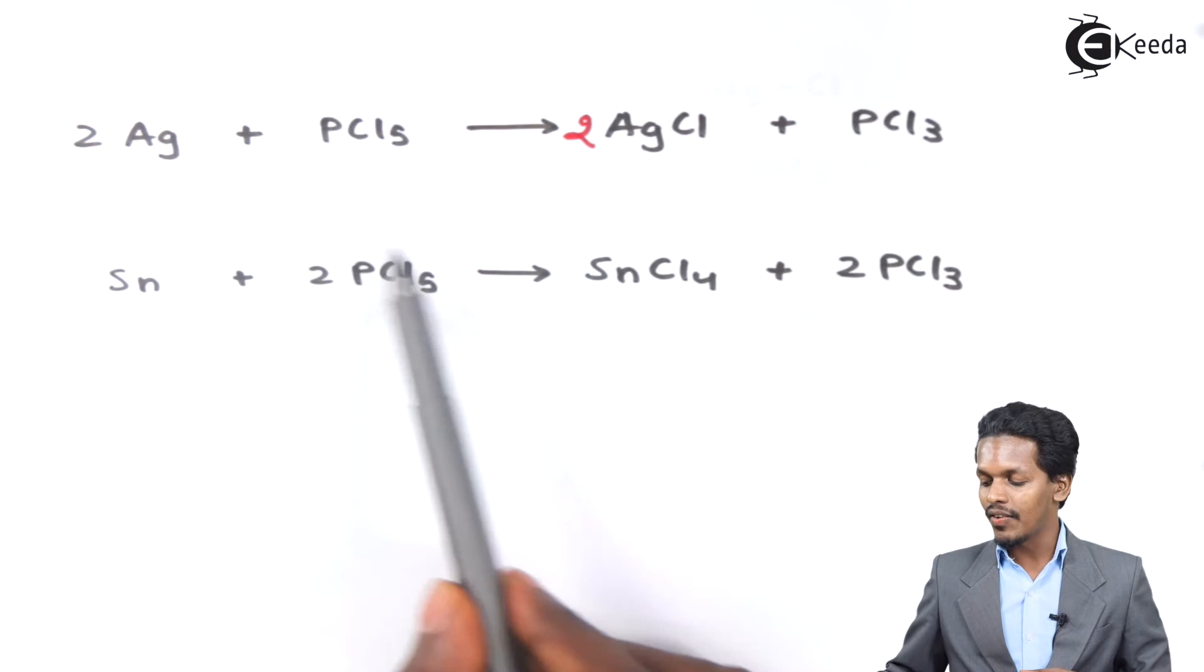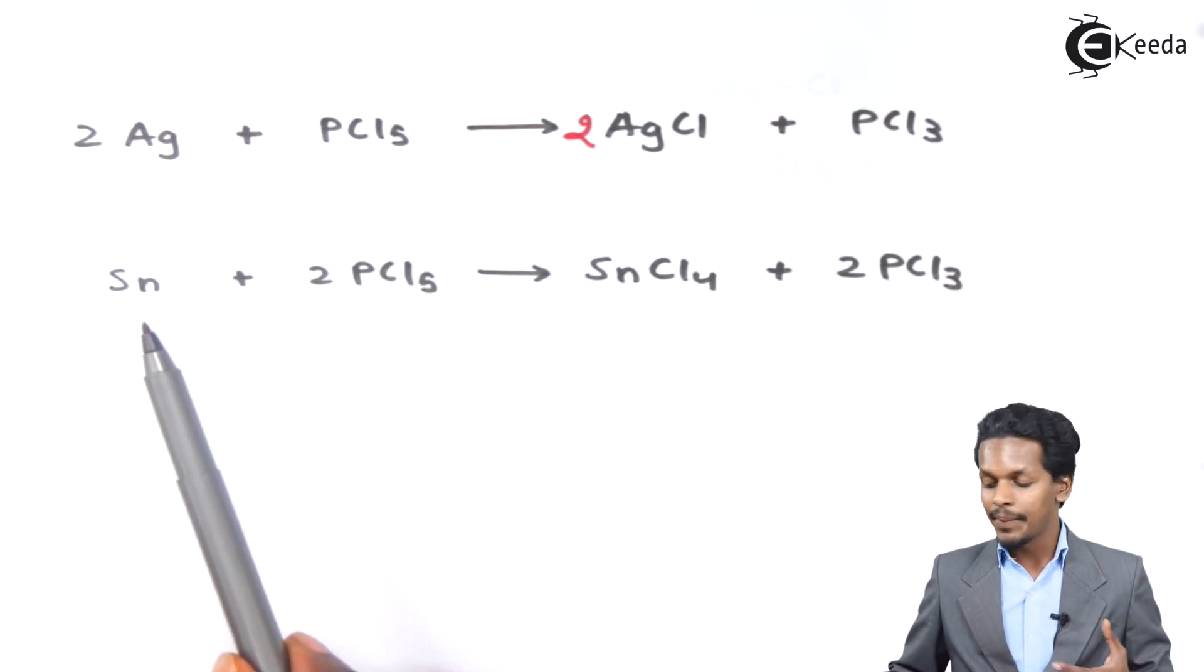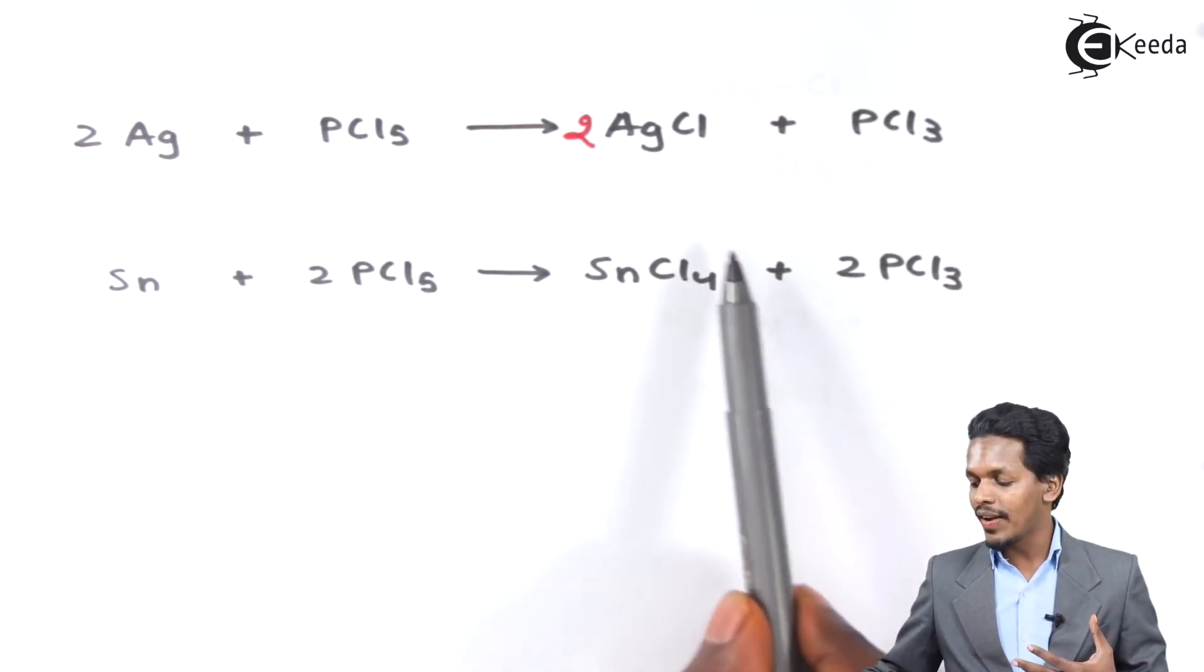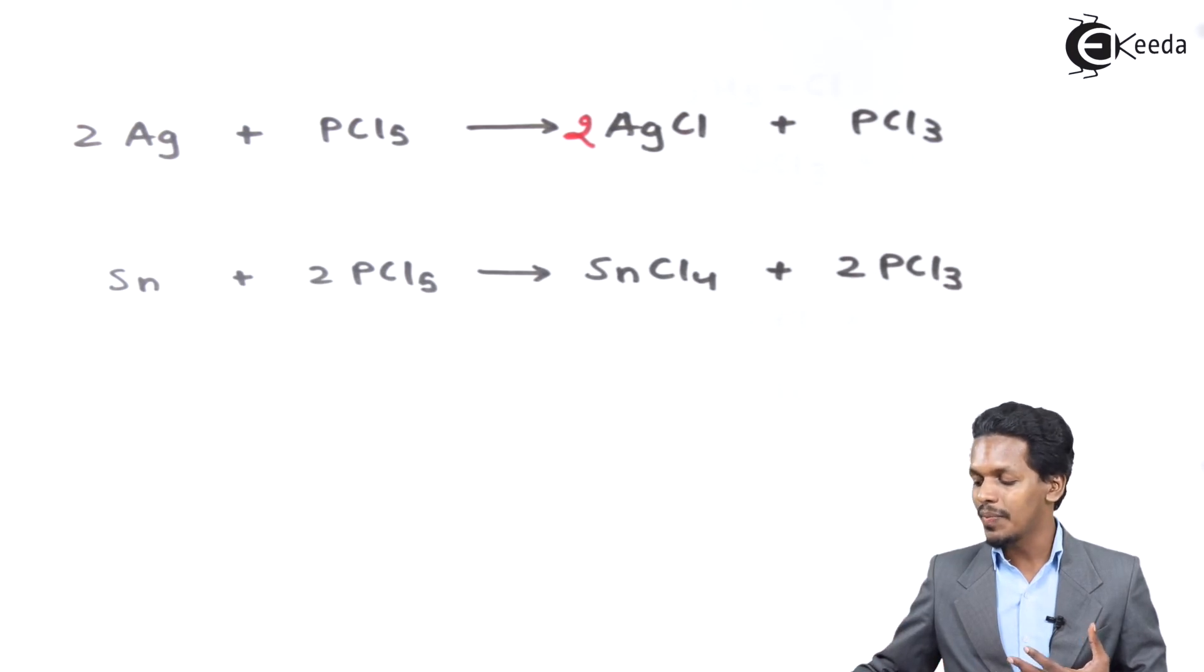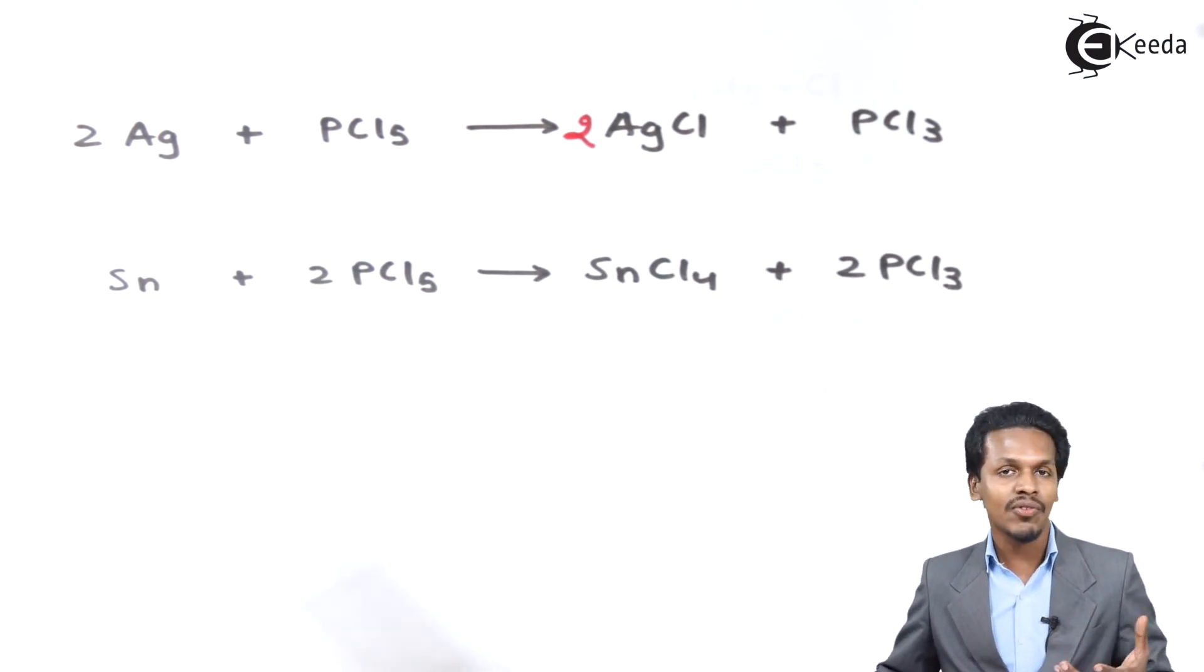Talking about the next one: whenever PCl5 is treated with tin, when tin is reacted with PCl5, it forms SnCl4 along with 2 moles of PCl3. This is known as stannous chloride.